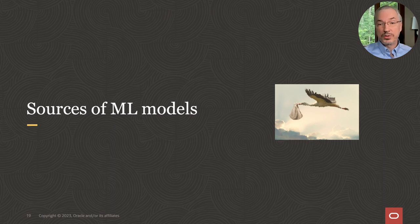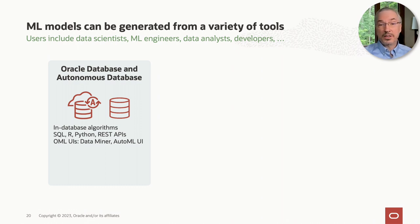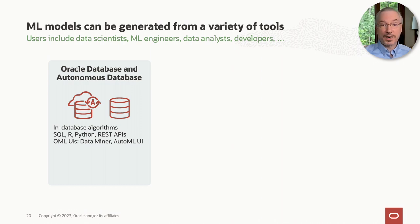Where do machine learning models come from? There are multiple tools used by people in various roles — data scientists, machine learning engineers, or ML-savvy developers. They may use SQL, PL/SQL, R, Python, or prefer no-code user interfaces and AutoML. What you may not know is that your Oracle Database and Autonomous Database instances already contain powerful machine learning algorithms and tools directly in the core database software — just like the query optimizer. You can access these from SQL, R, Python, REST APIs, and no-code user interfaces.